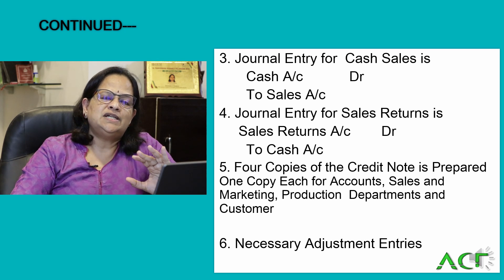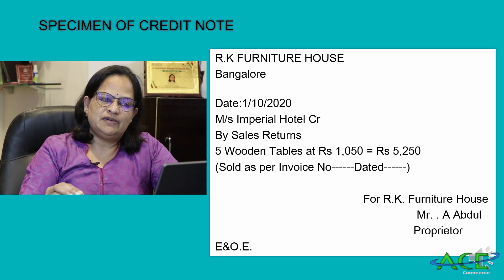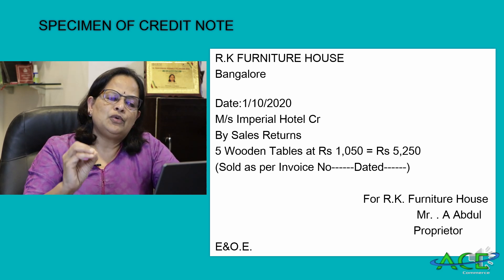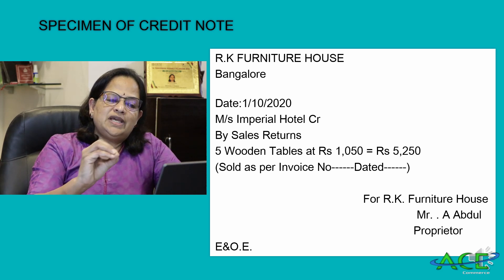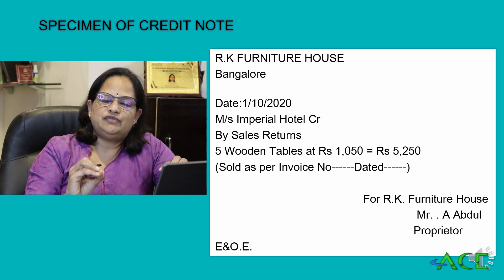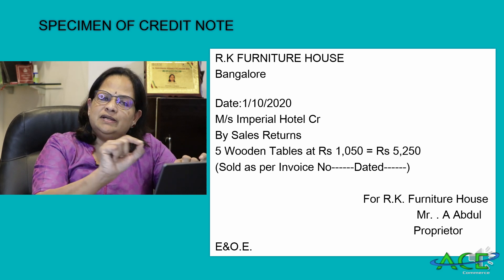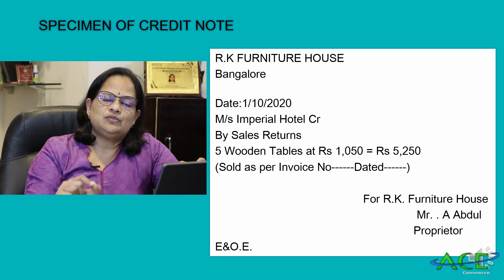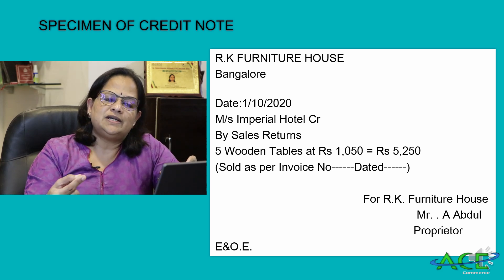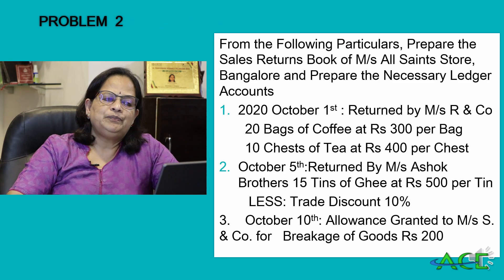A specimen credit note is given: a furniture dealer receives a return from Imperial Hotel Bangalore — five wooden tables at ₹1,050 each, total value ₹5,250. The credit note includes the date and references the original sales voucher. This is the standard format of a credit note used when processing sales returns.